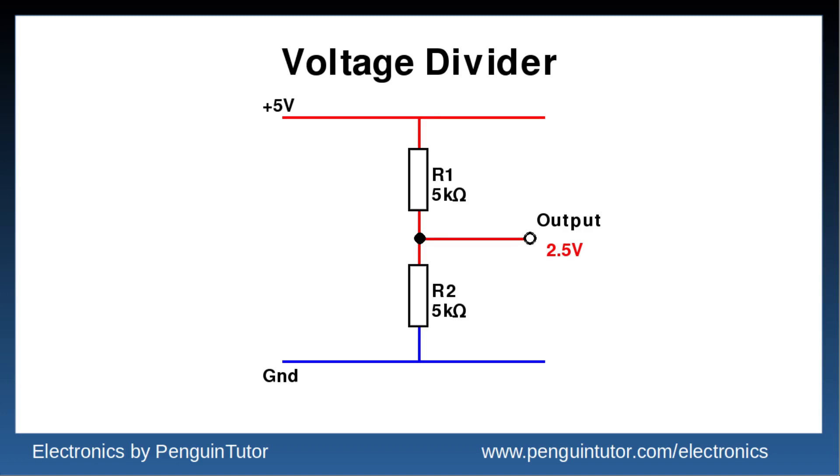The basics of the circuit are shown here. In this case this is between a 5 volt power supply, although this could be used across different signals. There are two resistors of equal value and the voltage between those resistors is half the supply voltage, so 2.5 volts.